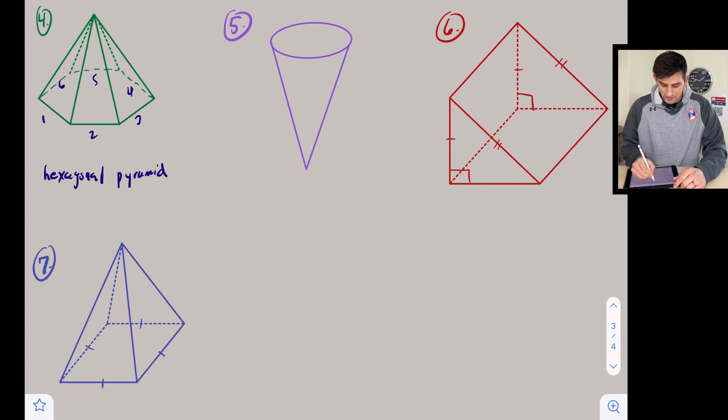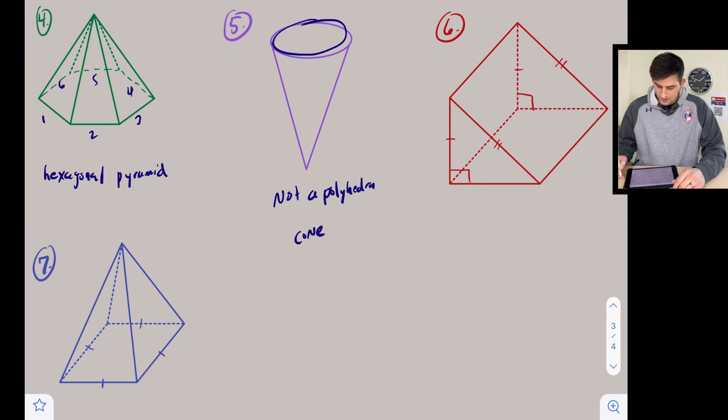Number five: notice we have this circle right here. This is going to be a cone, so it is not a polyhedron.